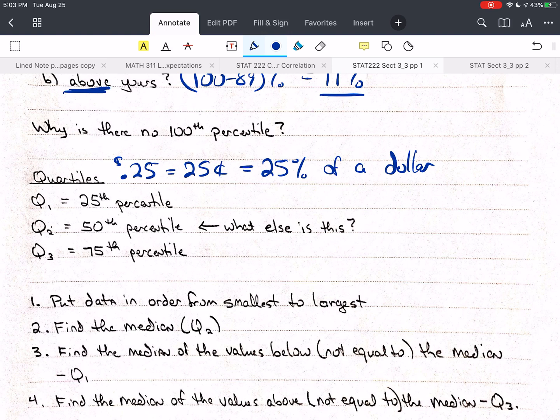So that's what our quartiles, they sound like quarter, doesn't it? So quartiles. So the Q1, or the first quartile, is the 25th percentile. This is the first quartile.